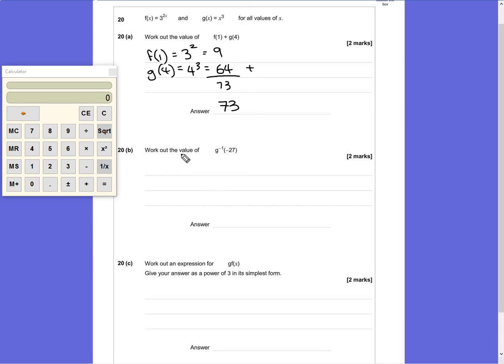Question 20b asks you to work out the value of g^(-1)(-27). When you do anything to the power of -1, it does the opposite or the inverse operation. So instead of cubing x, we're going to find the cube root.